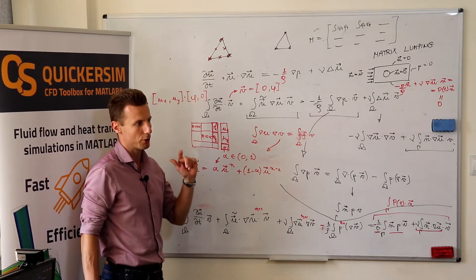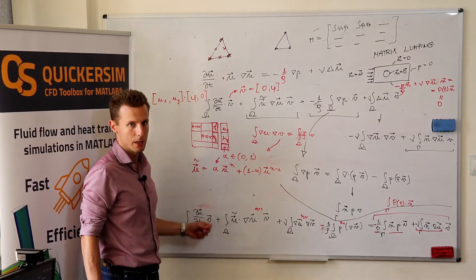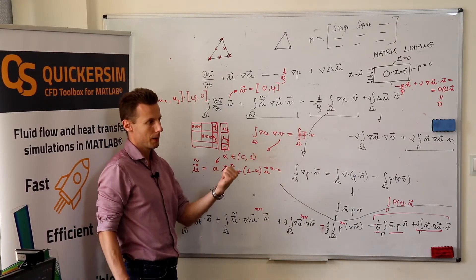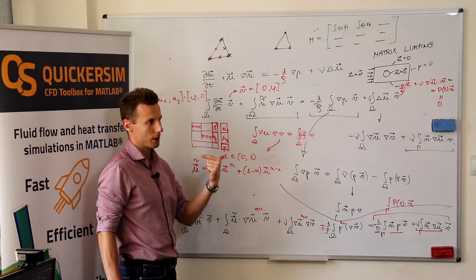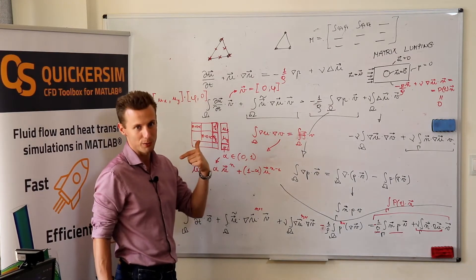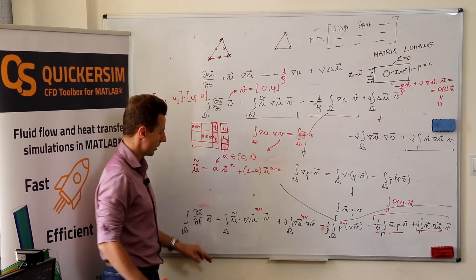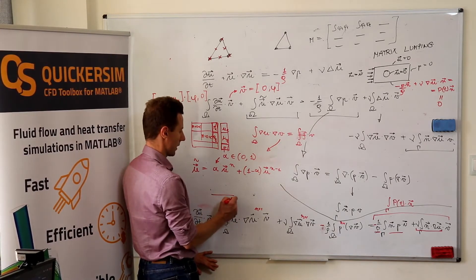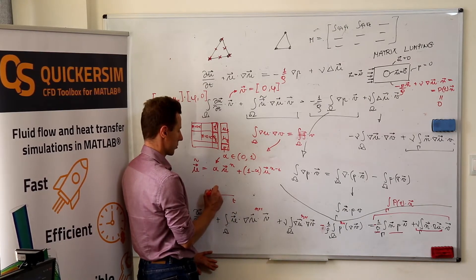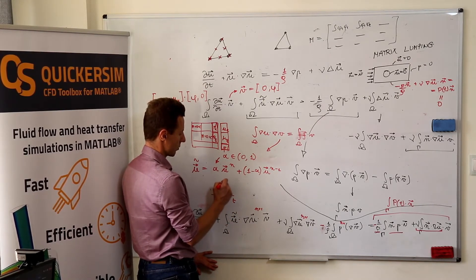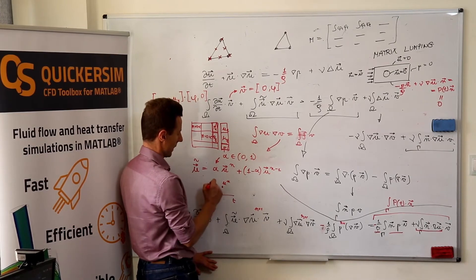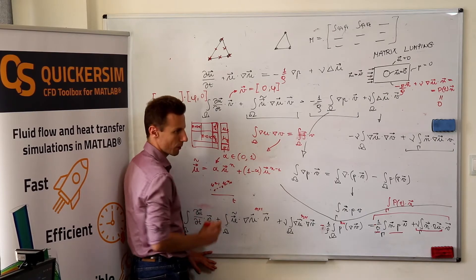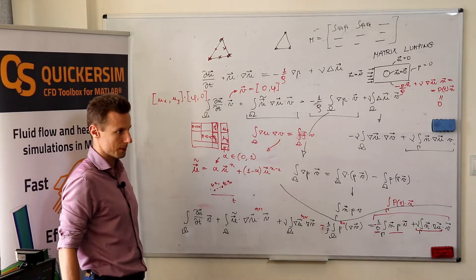If you've got a higher order scheme with respect to time, meaning that you don't only remember the previous time step, but you remember at least the second previous time step, then what people do here, you can apply something, okay, you've got some time history, you know that this was, this is your u^n, this is u^(n-1).